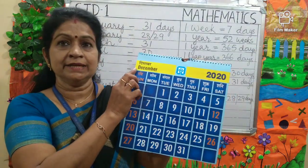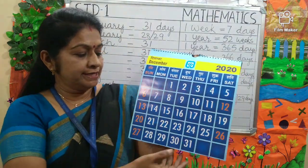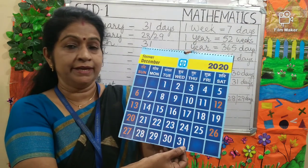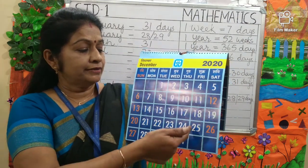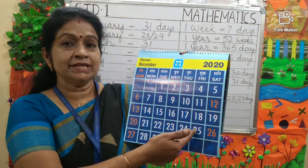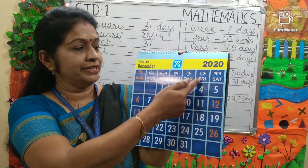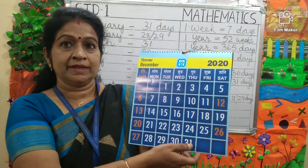The last month is December. It has 31 days. 25th December — Christmas falls on Friday.